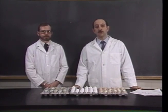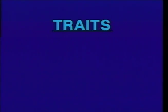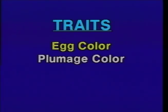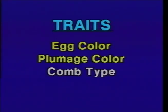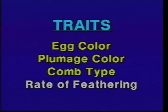We're going to be dealing with four traits today. The first trait is egg color, and we'll discuss the inheritance pattern. The second is plumage color, which involves incomplete dominance and provides a very good example of that. The third trait is a type of comb, and we'll show three examples. The final trait deals with rate of feathering and how it relates to sexing of chickens.